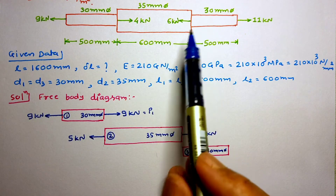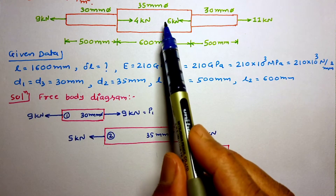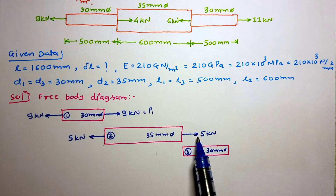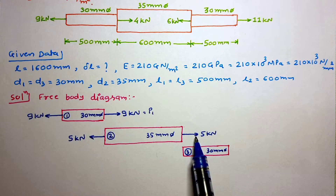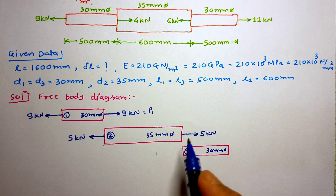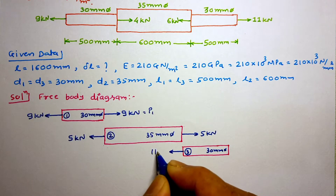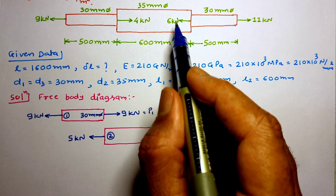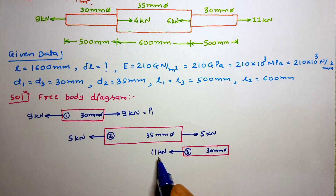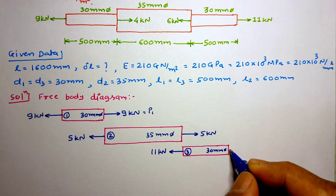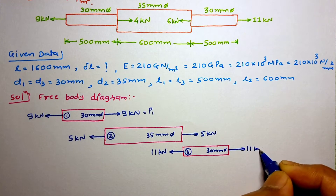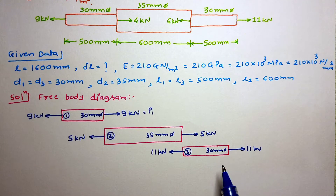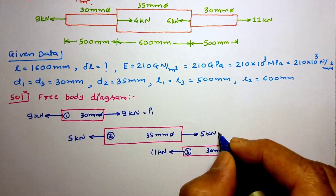Here a 6 kN force is given in the left-hand side direction, but we have applied 5 kN in the right-hand side direction. So we apply 11 kN in the opposite direction: 11 minus 5 equals 6 in that direction. Now considering the equilibrium of Section 3, we apply 11 kN in the opposite direction. The same sign and magnitude of force is applied, so it is balanced. So P3 = 11 kN and P2 = 5 kN.